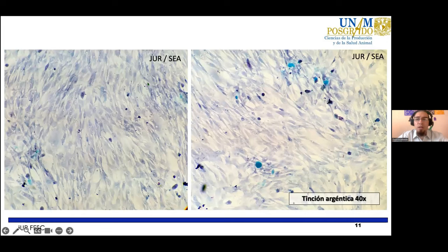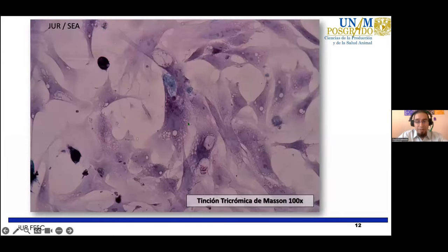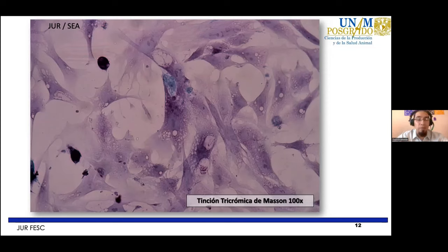La tinción argéntica se utiliza para evidenciar tejido nervioso y algunos tipos de colágena, principalmente colágena tipo 3. En este caso no estamos observando ninguna de las dos estructuras. El intestino presenta células de tejido conectivo, musculares y nerviosas, y teníamos que estar seguros de que las células observadas eran del estirpe del epitelio intestinal y no células musculares o de tejido conectivo, que son fácilmente reproducibles. La tricrómica de Masson también es una tinción diferencial que permite observar células musculares, nerviosas y de tejido conectivo, y en este caso tampoco se observa ninguna de ellas.